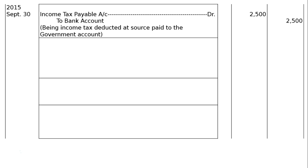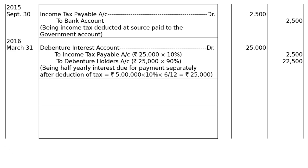Next, interest due on 31st March 2016: Debenture Interest account debited to Income Tax Payable account — Rs 25,000 × 10% = Rs 2,500; to Debenture Holders account — Rs 25,000 × 90% = Rs 22,500. Being half-yearly interest due for payment after deduction of tax (Rs 5 lakh × 10% × 6/12 = Rs 25,000).